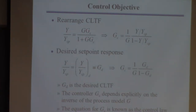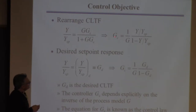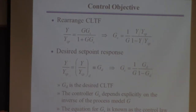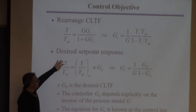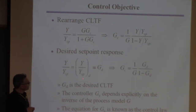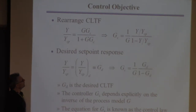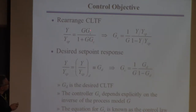To use this to design Gc, I need everything on the right-hand side. I know G — that's the process transfer function. But at this point I don't know what Y over Ysp is, because that's normally something I compute. Now I'm going to specify it. I want to specify what I want this ratio — the closed-loop response — to be. I'm going to call that desired transfer function Gd.